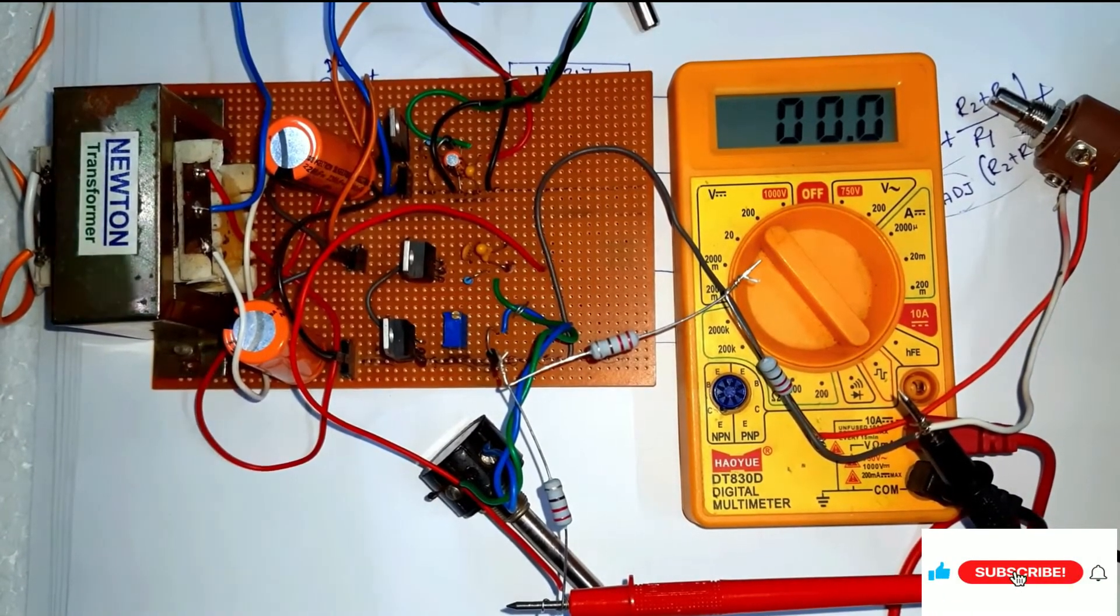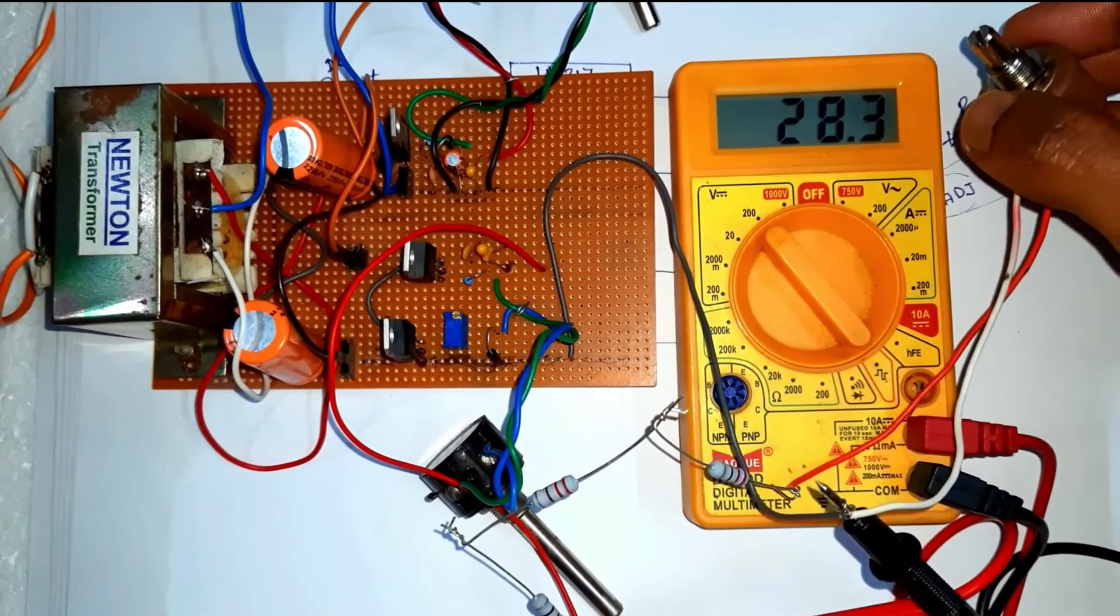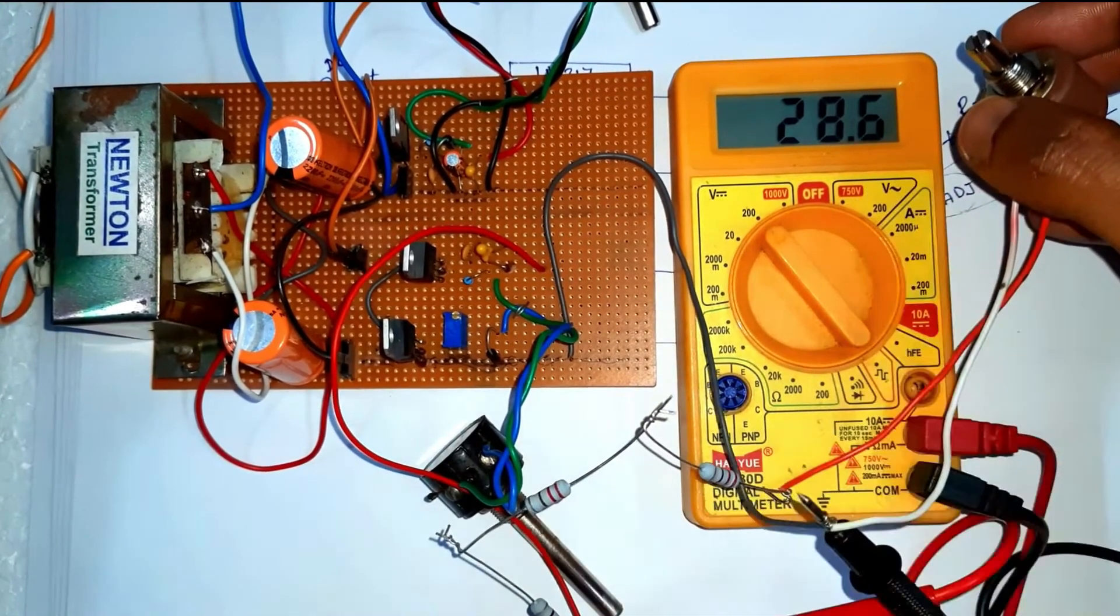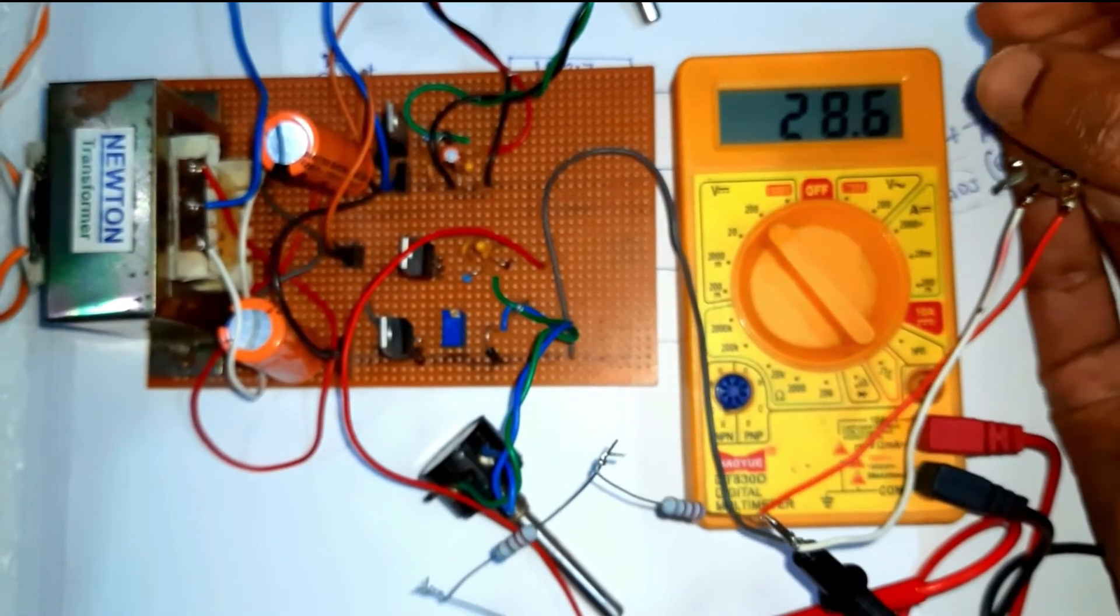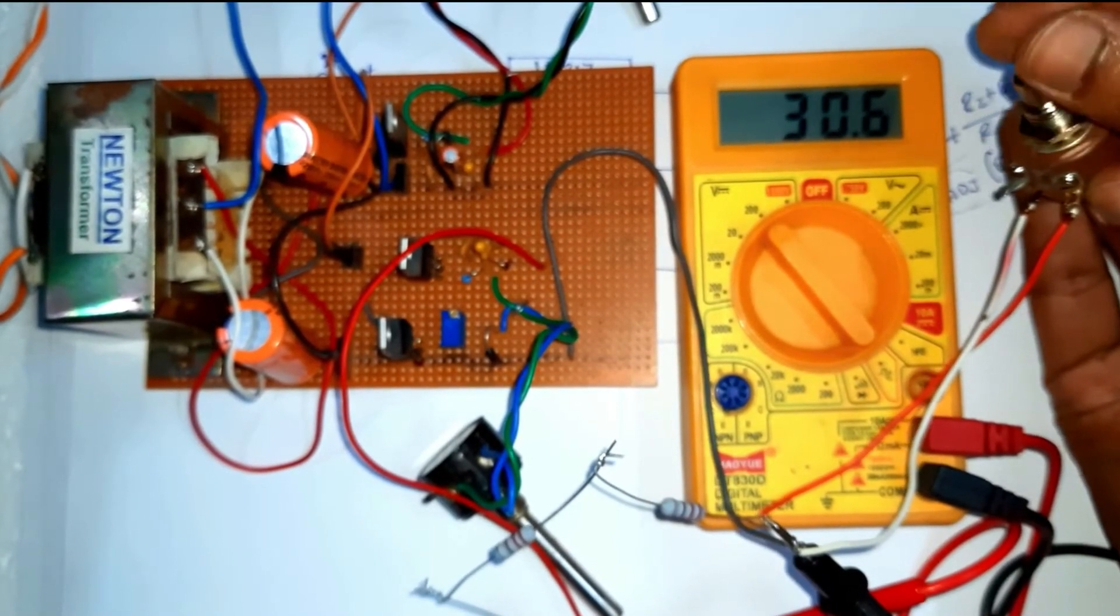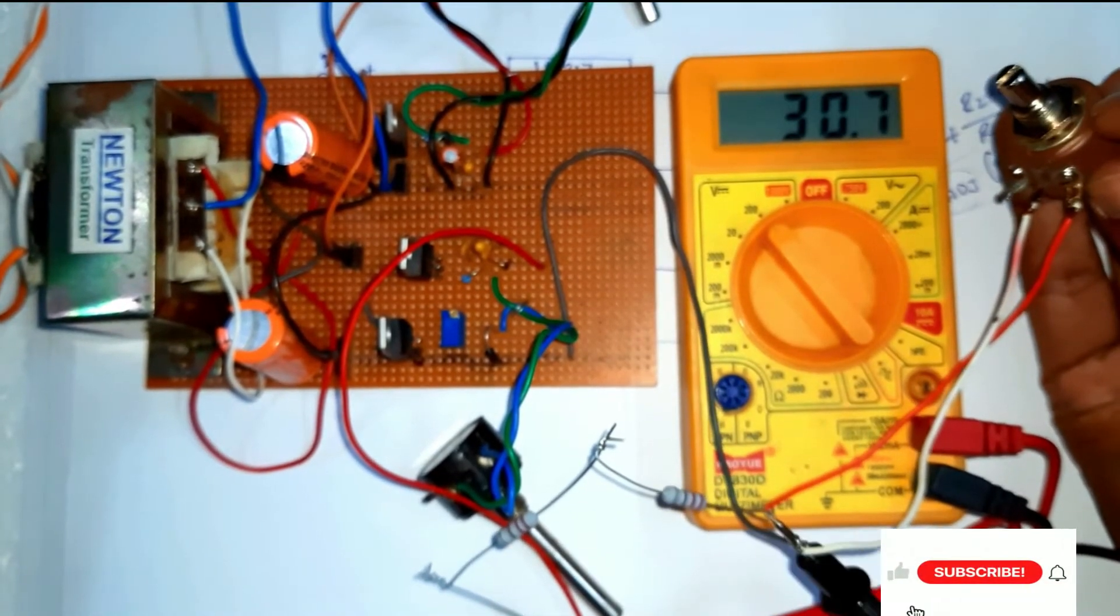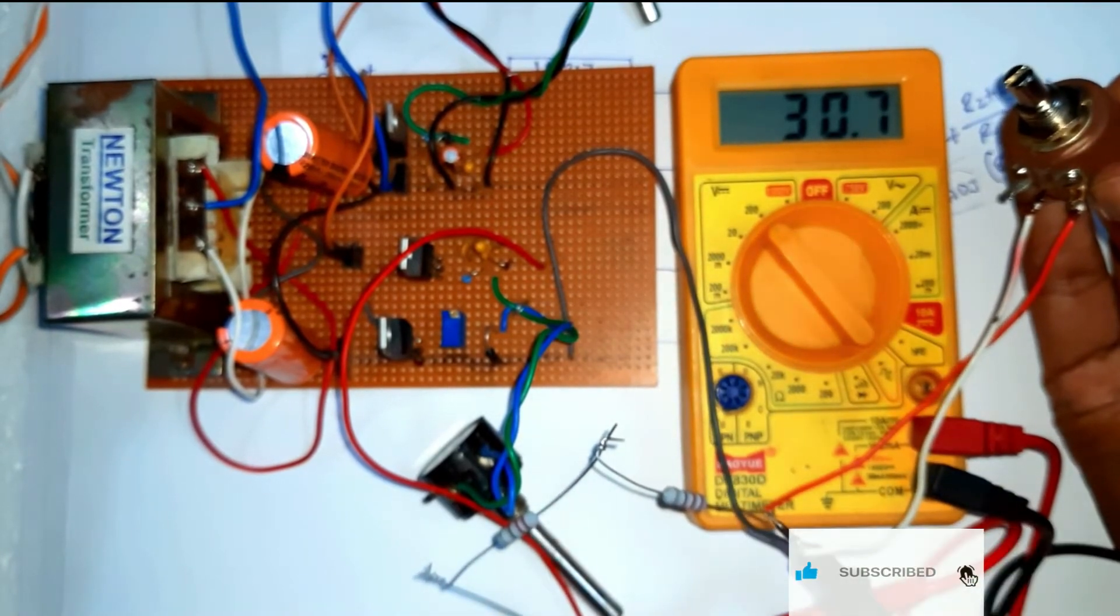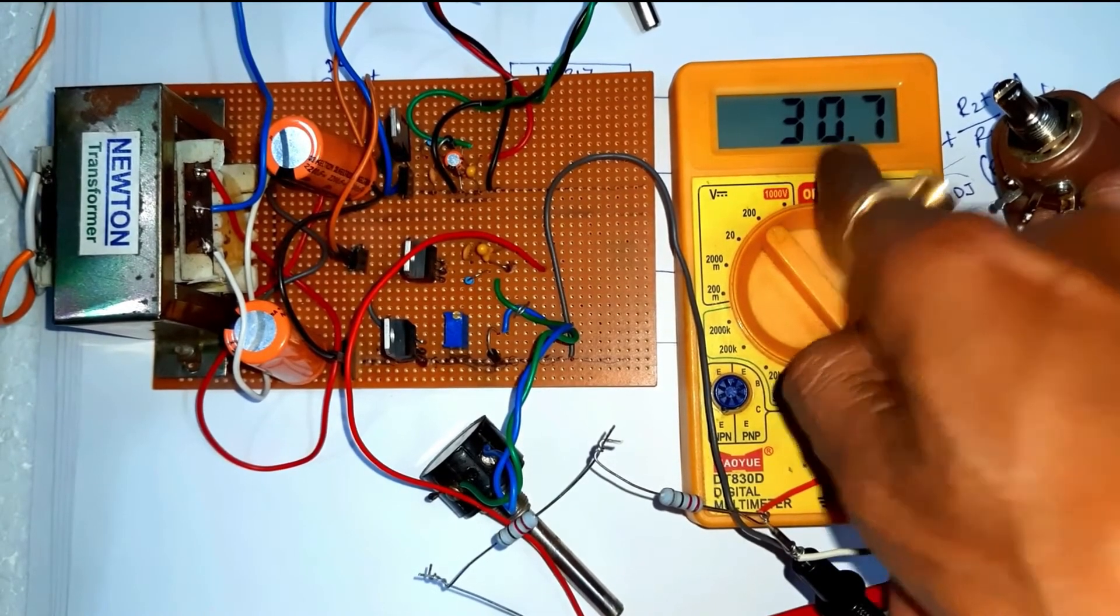Now switch on the circuit. Output voltage 28.6 volt just below the 30 volt. Now change this pot, the maximum load resistance that is 10k plus 660 ohm. Now output voltage is 30.7 volt.